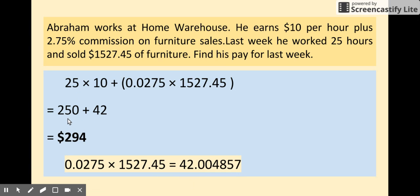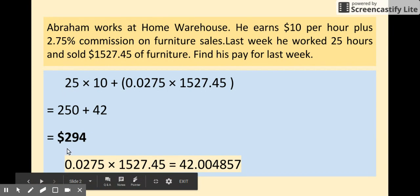So this is what he originally earns and then his commission. So in the end, we got how much Abraham earns. That is $294.